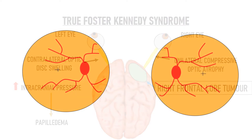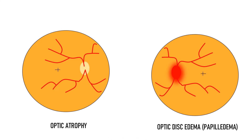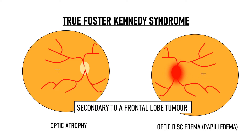So this condition in which one eye has optic atrophy and the other eye has optic disc edema secondary to a frontal lobe tumor is known as true Foster Kennedy syndrome, or simply Foster Kennedy syndrome.